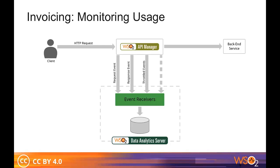The next step is to monitor the usage of the consumers who are using your APIs and to invoice them accordingly. We configure WSO2 Data Analytics Server, or DAS, to enable API analytics. Once configured, you can have six types of event streams: request event stream, response event stream, throttle, fault, destination, and workflow. These event streams are published into DAS, and the billing engine can use this later to generate the invoice.